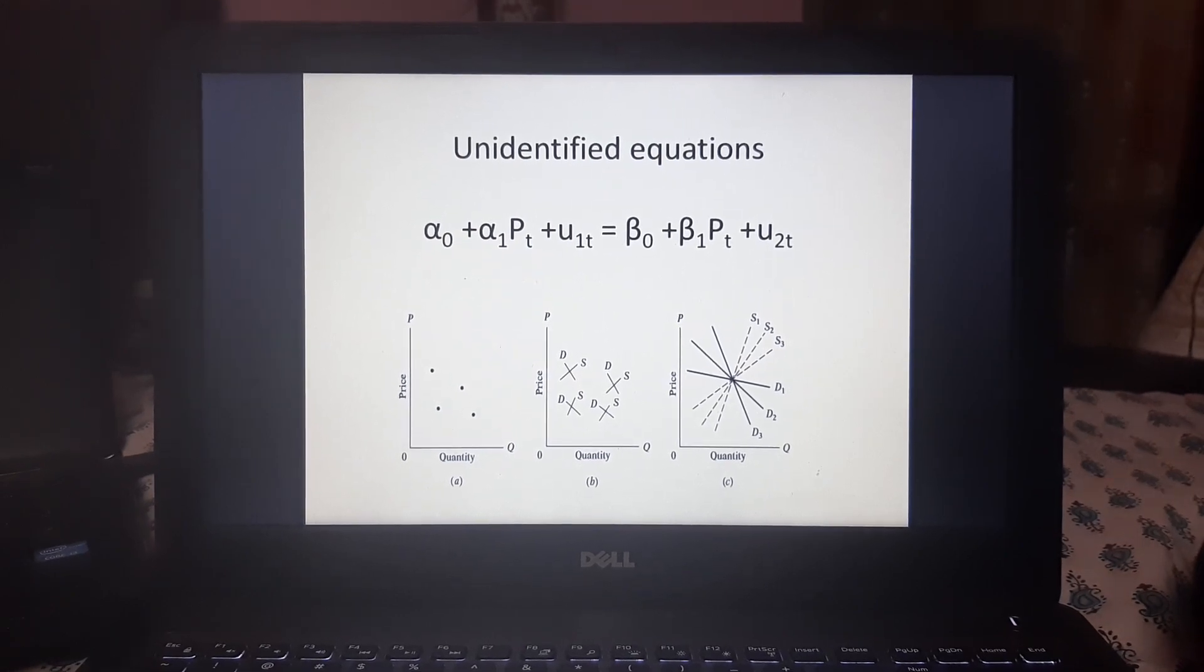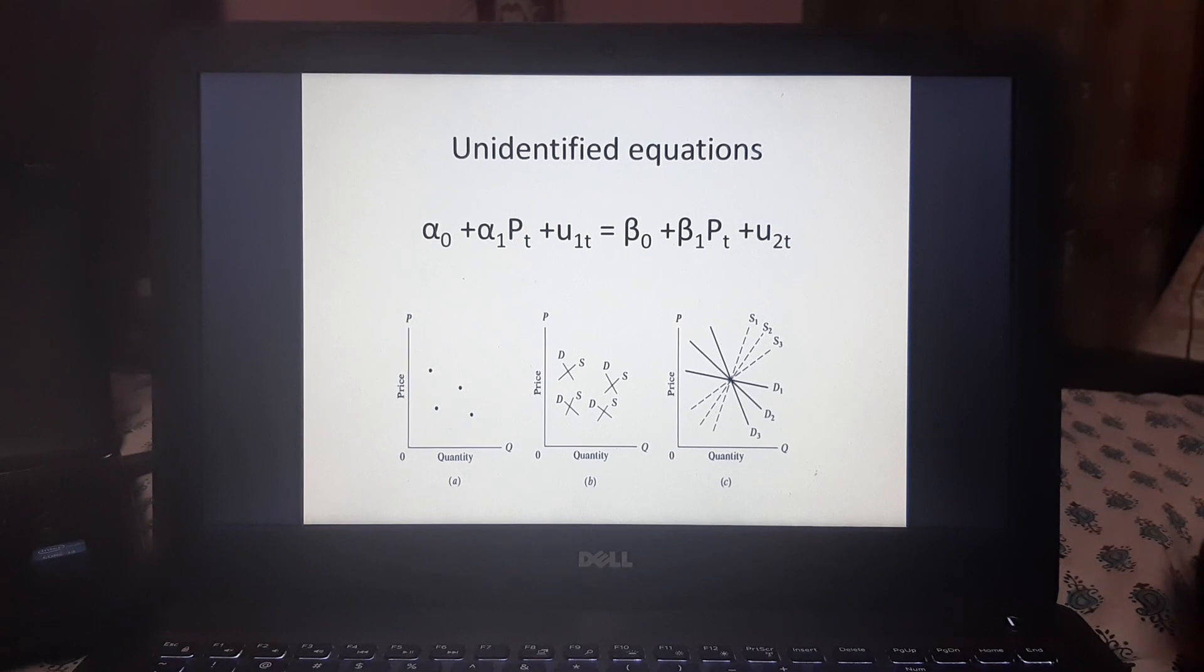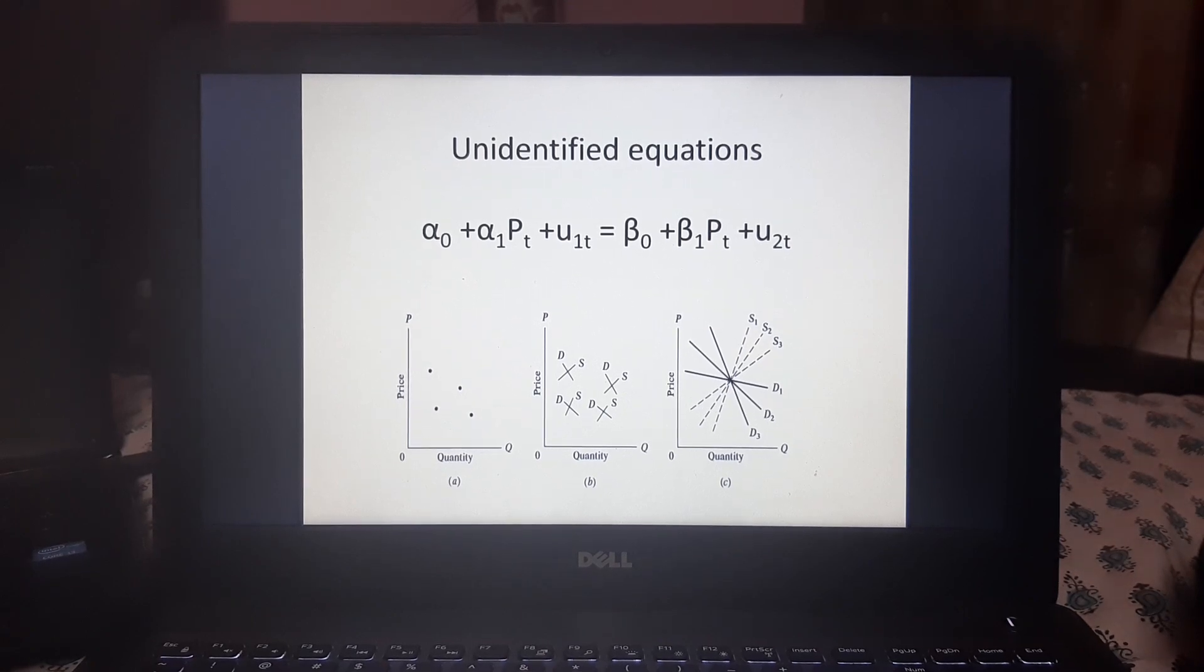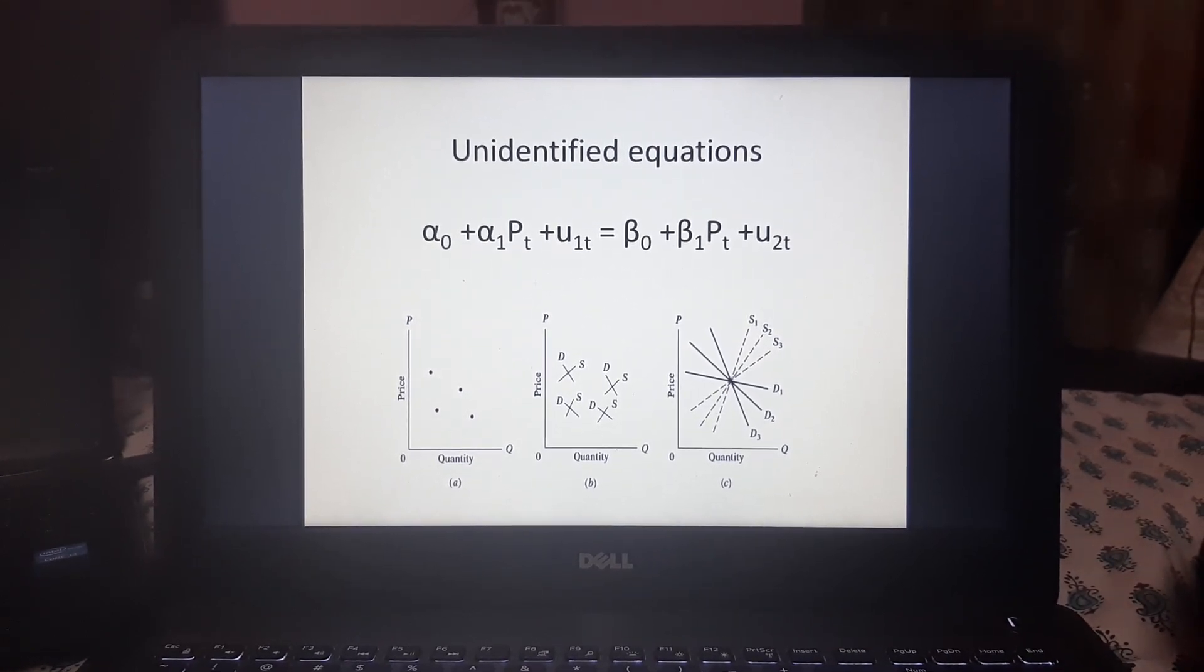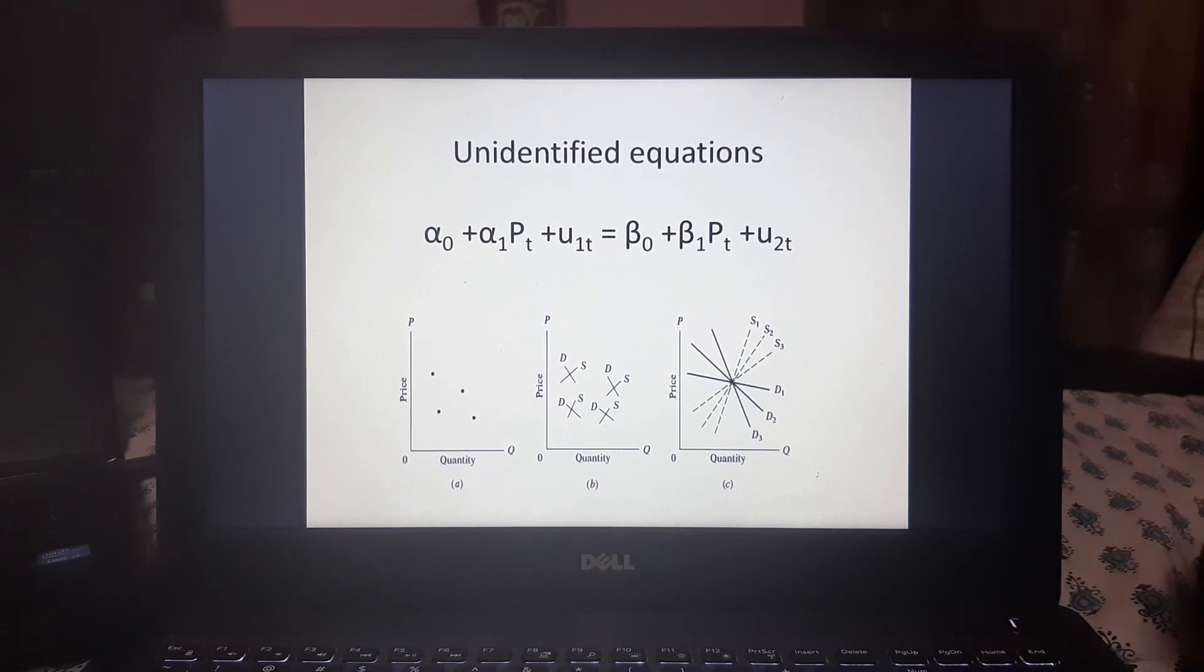Now, let's take an example of unidentified equation. This is a demand and supply equilibrium where on the left hand side, we have demand equation and on the right hand side, we have the supply equation. Now, we have only the time series data on P and Q and no other information like income of the consumer and weather conditions.